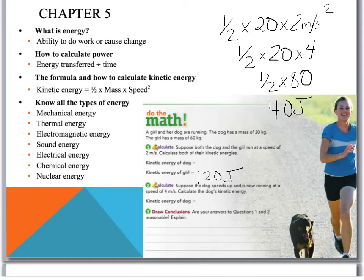And then finally here, let's pause it again. The dog speeds up and is now running at a speed of 4 meters per second. So figure, if the dog's running faster, the kinetic energy. Pause it. Take a minute to answer that.